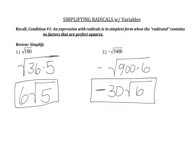Hopefully you got 6 square root of 5 and negative 30 square root of 6. In number 1, the biggest perfect square that goes into 180 is 36. Now you didn't have to start with 36 — 9 goes into that, and so does 4. So you could have started with 9 and then pulled out a 4, or started with 4 and then pulled out a 9. But 36 is the biggest one.